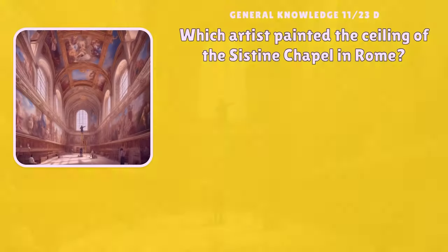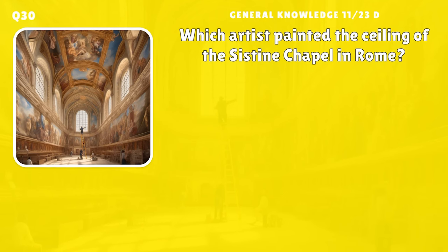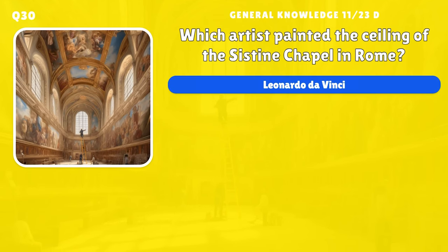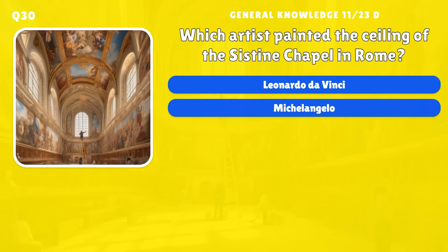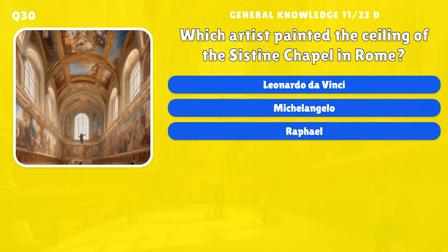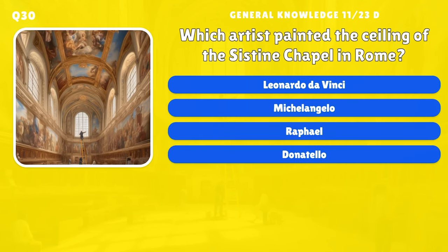Which artist painted the ceiling of the Sistine Chapel in Rome? A) Leonardo da Vinci, B) Michelangelo, C) Raphael, D) Donatello.